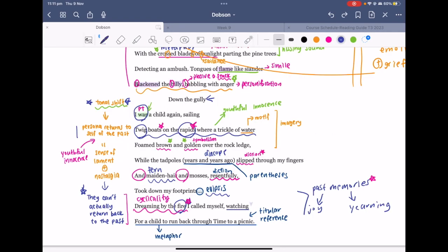What's interesting to note is that the strong and bitter emotions that mark the beginning of the poem can no longer be seen. Rather, the metaphor here of watching for a child to run back through time to a picnic captures the complex emotions of the persona where reflection upon the past has become both a source of joy and consolation but also a source of yearning and nostalgia.